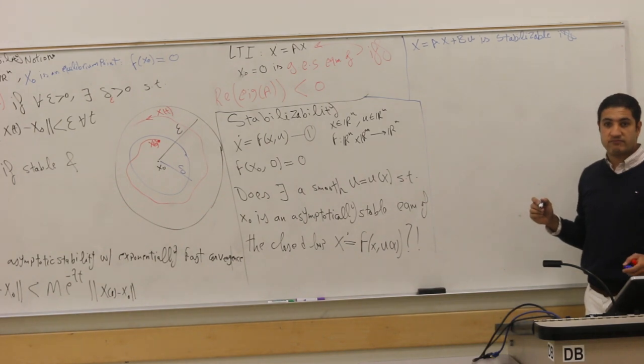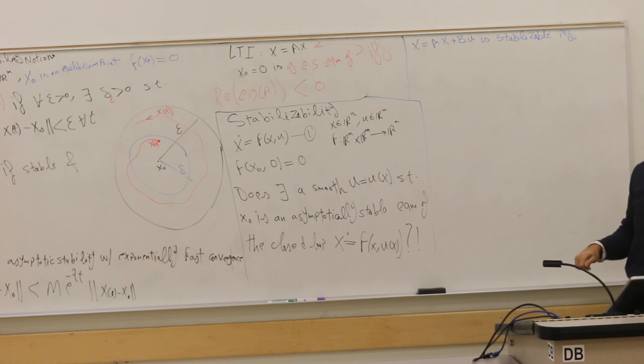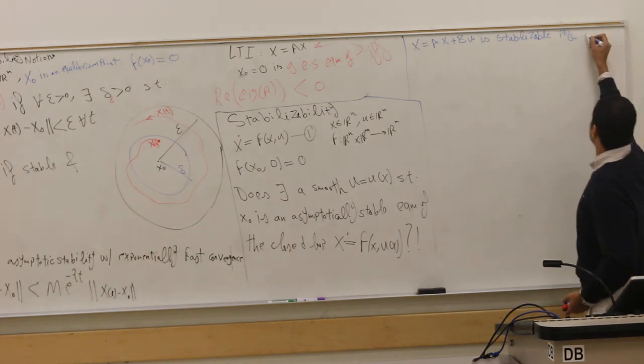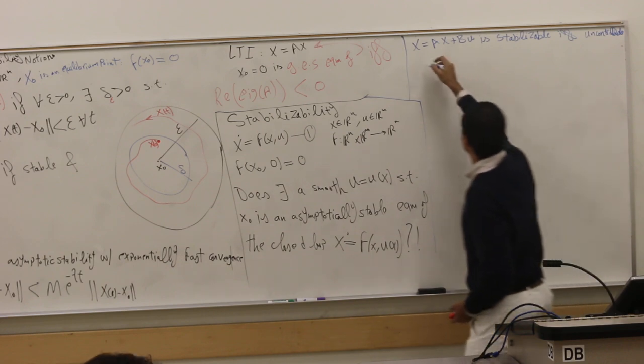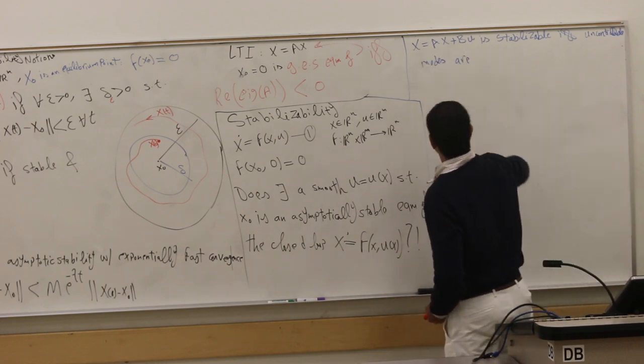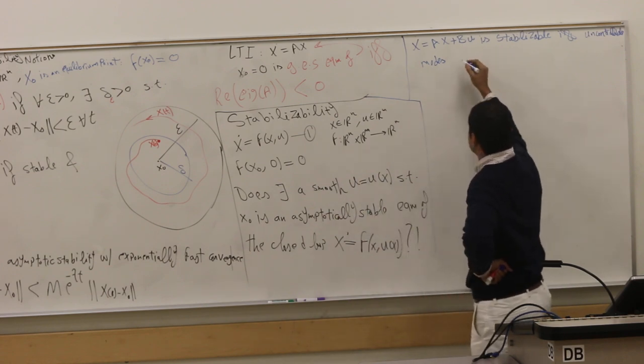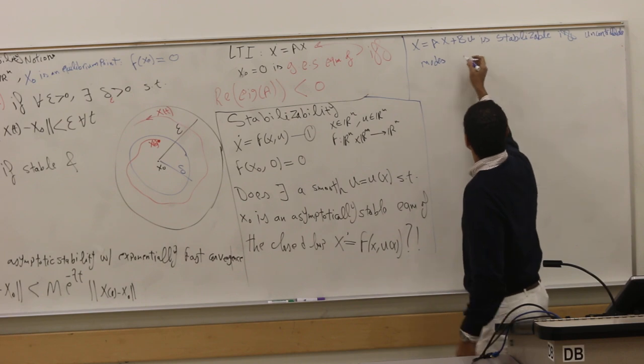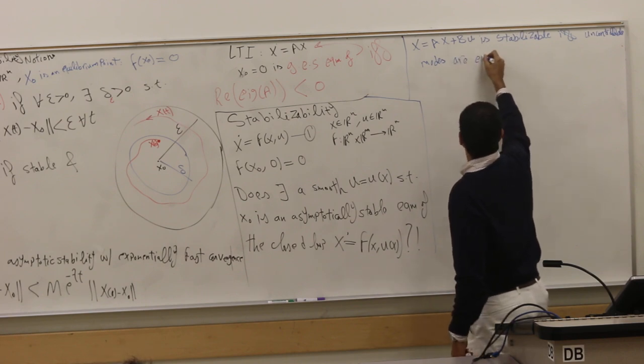When can we make the linear system stable? If the uncontrollable mode is stable? Yes. So if and only if the uncontrollable modes have no unstable modes, right? The uncontrollable modes are exponentially stable.